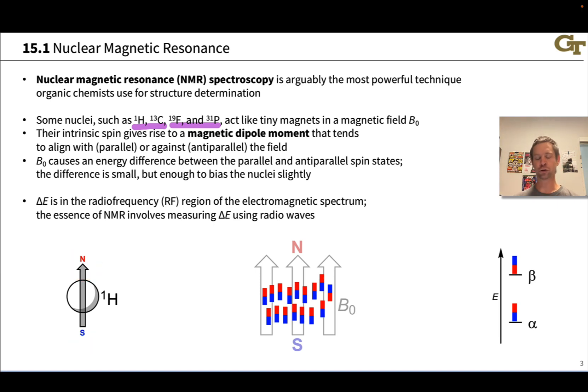When we apply an external magnetic field, which we're going to represent throughout this unit as B₀, to a sample of protons, they can align themselves either parallel to the field or anti-parallel to the field. There's an energy difference between these two spin states: the parallel spin state that's also referred to as alpha and the anti-parallel spin state which is referred to as beta.